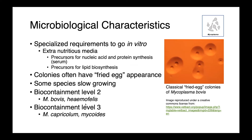Among the mycoplasma that we are able to grow in vitro, they require specialized media. It needs to be extra nutritious. They require precursors for nucleic acid and protein synthesis, as well as lipid biosynthesis. Remember, genome reduction means they lack a lot of the metabolic machinery to do things on their own. When we look at colonies of mycoplasma, they oftentimes have this fried egg type appearance. This is a Mycoplasma bovis culture. Some species can be quite slow growing and take multiple days in order to get a culture.